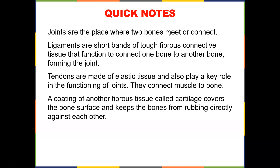Joints are the place where two bones meet or connect. Ligaments are short bands of tough fibrous connective tissue that function to connect bone to another bone, therefore forming the joint. Tendons are made up of elastic tissue and also play a key role in the functioning of joints — they connect muscle to bone. A coating of fibrous tissue called cartilage covers the bone surface and keeps the bones from rubbing directly against each other.